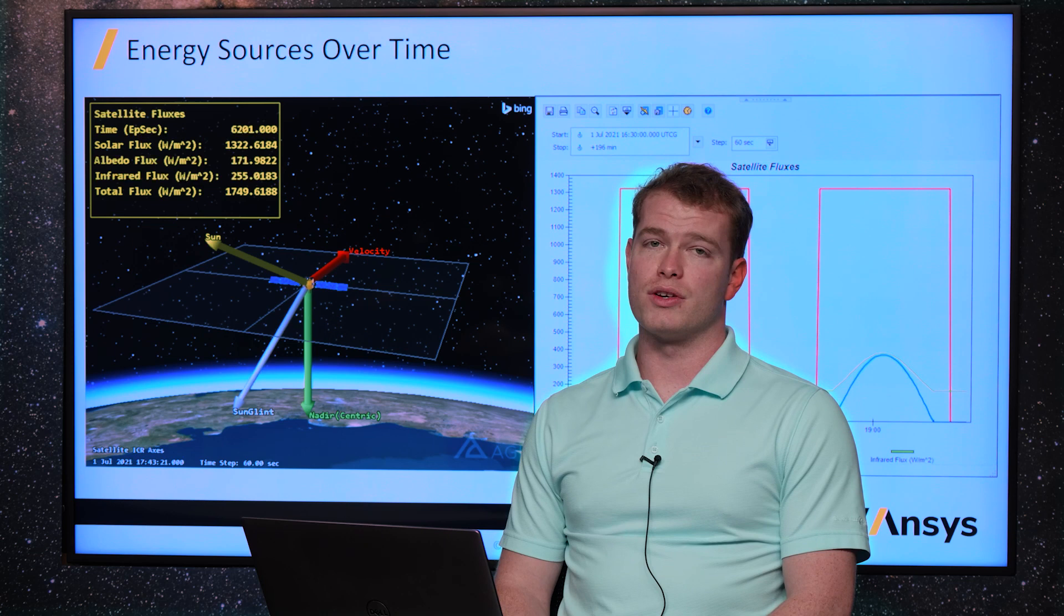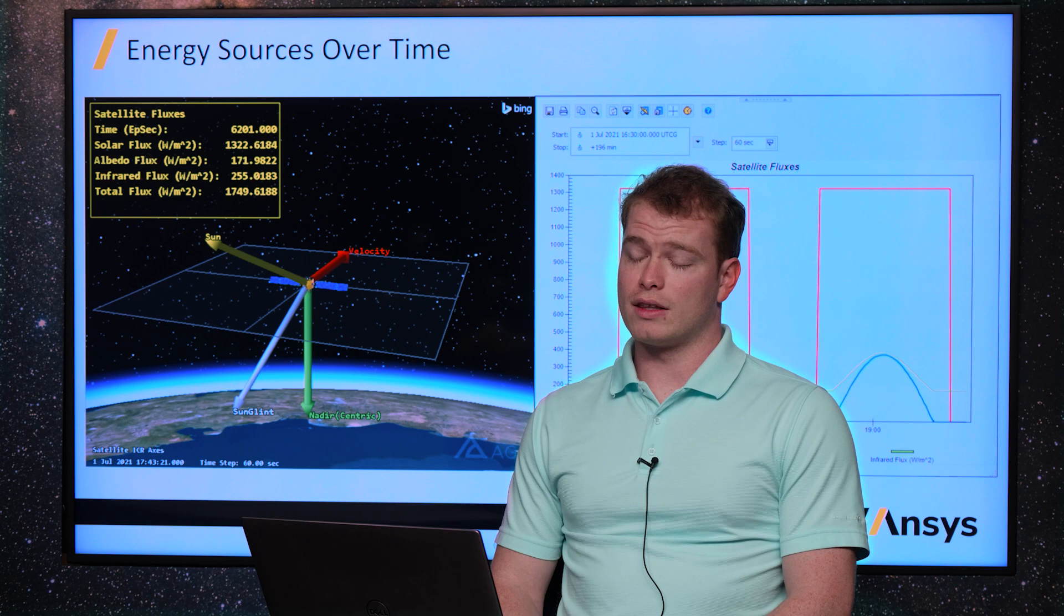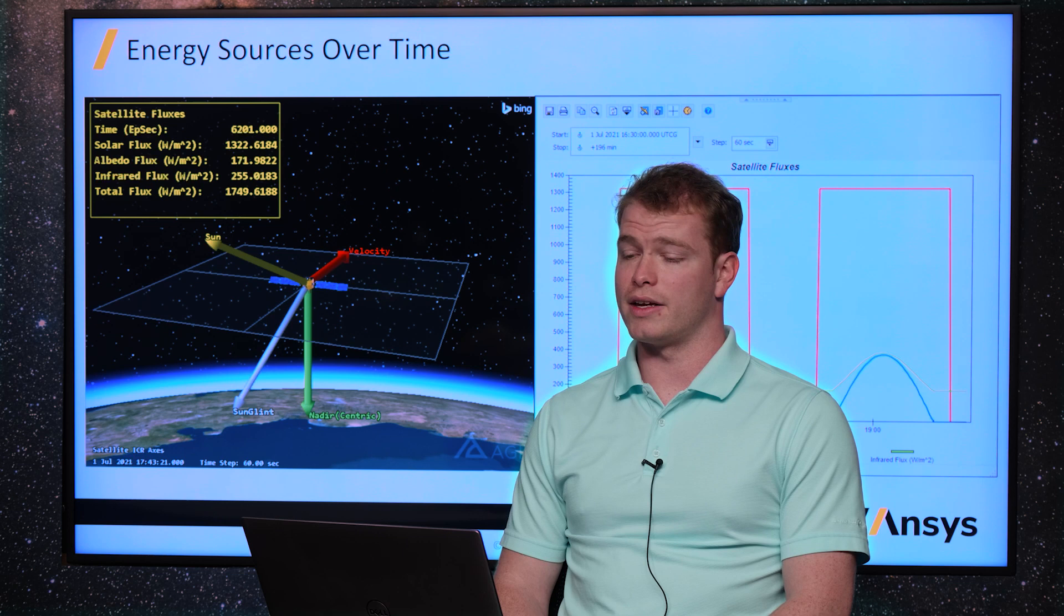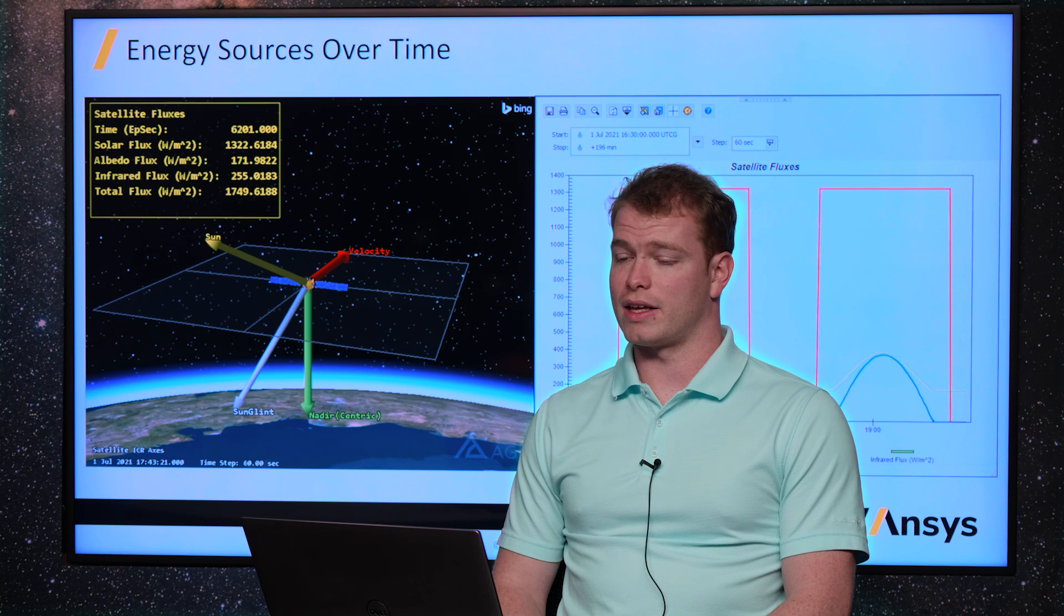On the right we have an actual graph of these satellite fluxes. You can see how they periodically vary throughout the orbit. For example, the red line on the graph there indicating the solar flux peaks whenever the satellite is directly in view of the sun and quickly transitions to zero as the satellite orbits behind the shadow of the Earth.